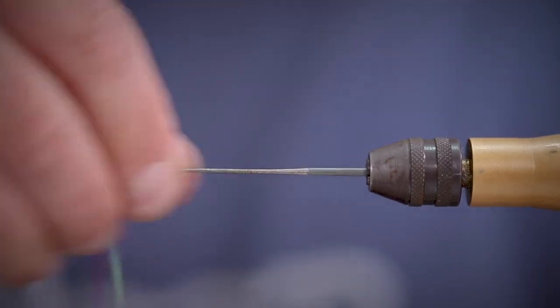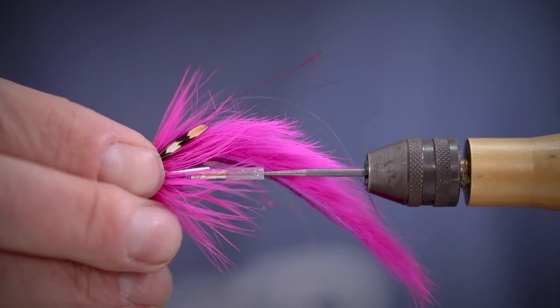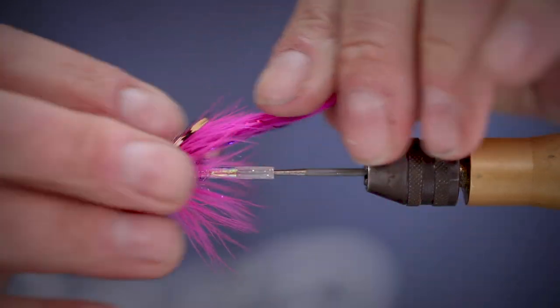And that's it. Super simple, really quick tie. Pink bunny leech, great for soft waters, steelhead, and believe it or not salmon.